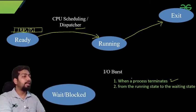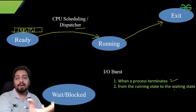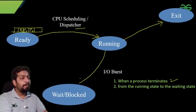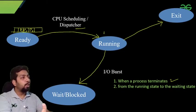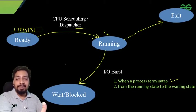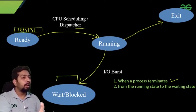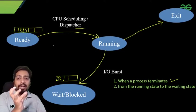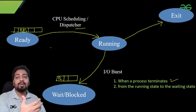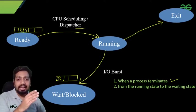The second case is when a process goes from the running state to the waiting state. This is the main reason for multiprogramming. Whenever a process goes from running to waiting or blocked state, the CPU is idle. Suppose P2 was running and needs to wait for some IO-related task — P2 leaves the CPU and goes to the waiting queue. Now P3 and P4 are in the ready queue, and the CPU scheduling algorithm decides which process gets the CPU.